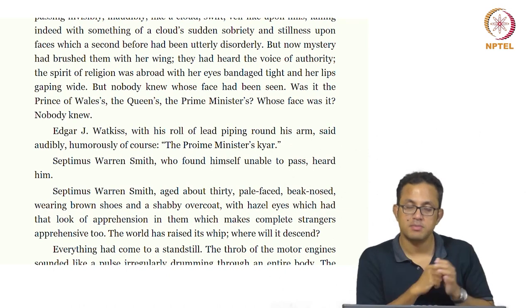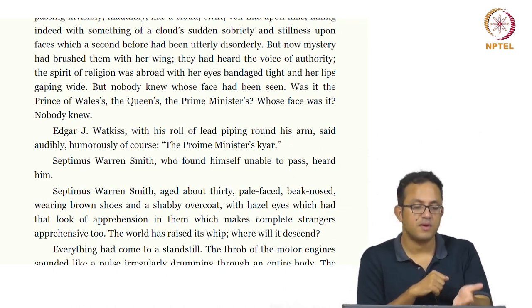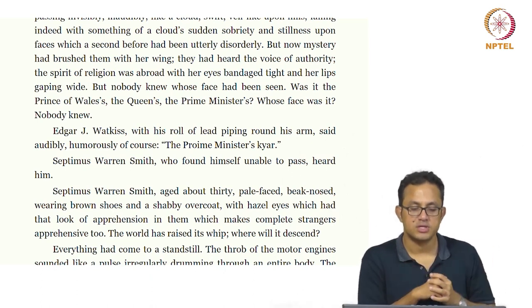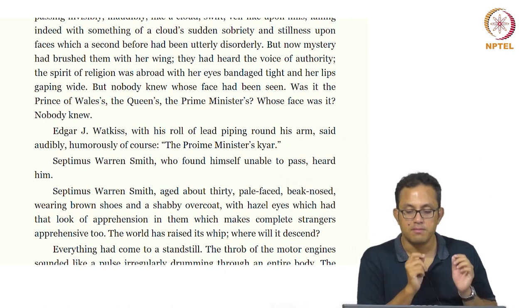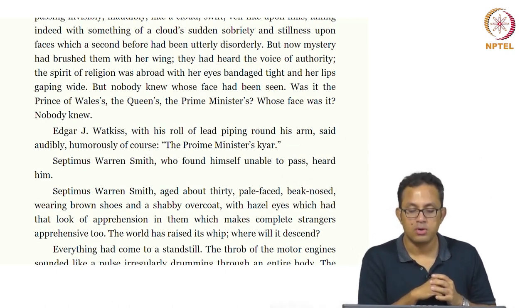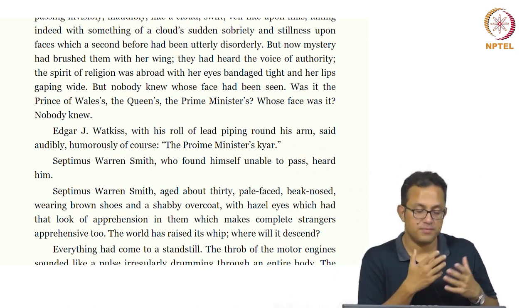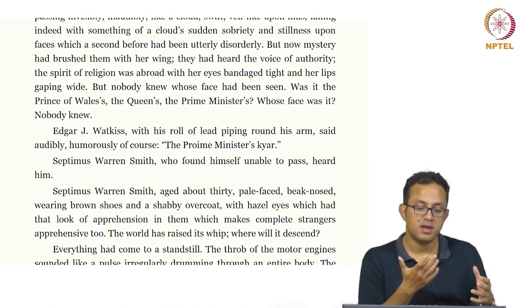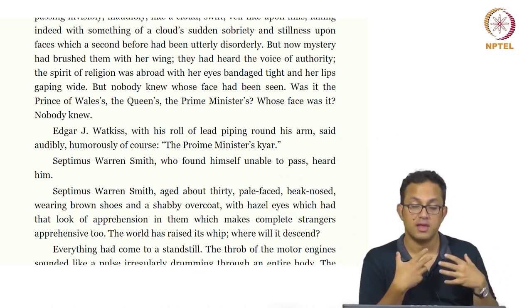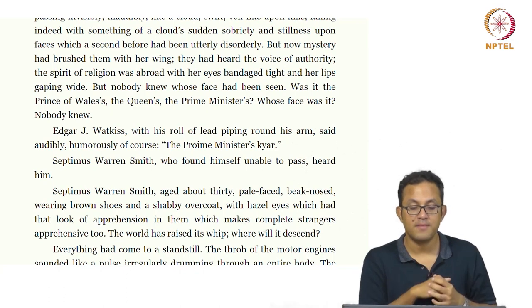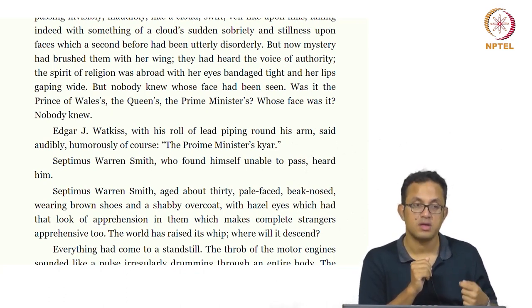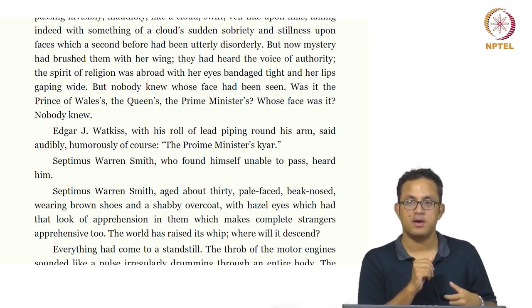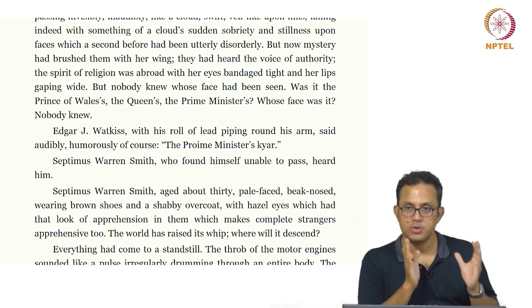The first reference to Septimus reflects his condition: 'Septimus Warren Smith, aged about thirty, pale face, big nose, wearing brown shoes and a shabby overcoat with hazel eyes which had a look of apprehension on them which makes complete strangers apprehensive too. The world has raised its whip — where will it descend?' He presumably suffers post-traumatic anxiety, an anxious look always on his face. This anxiety is embodied by him and told over and over again — the trauma of war is suffered repeatedly, showing spectacularly in his face.